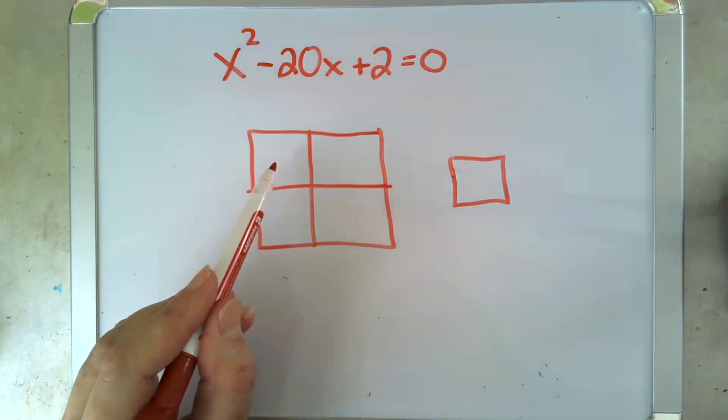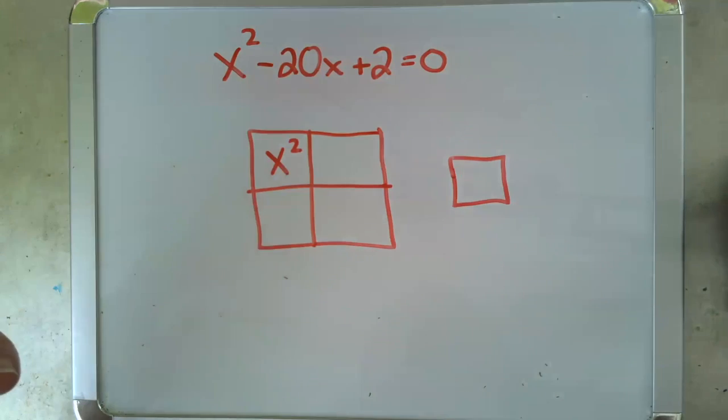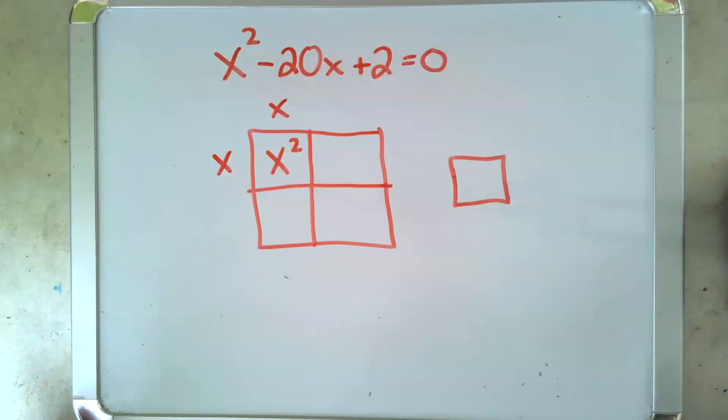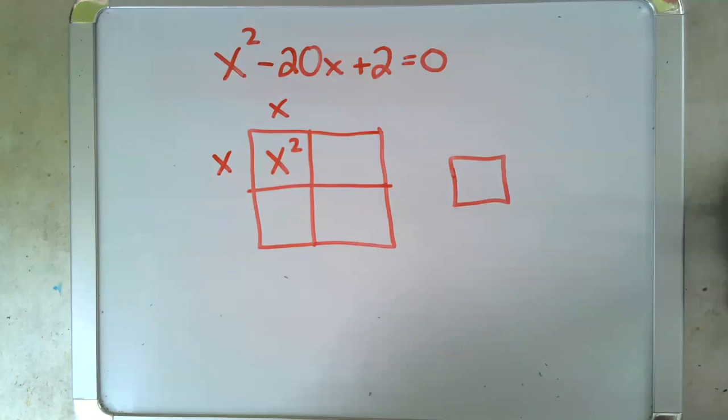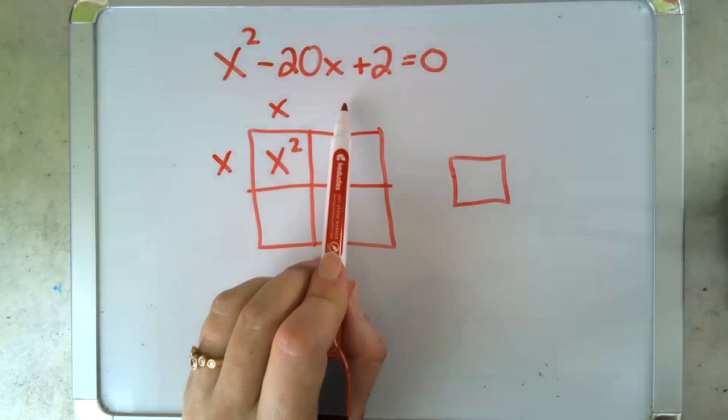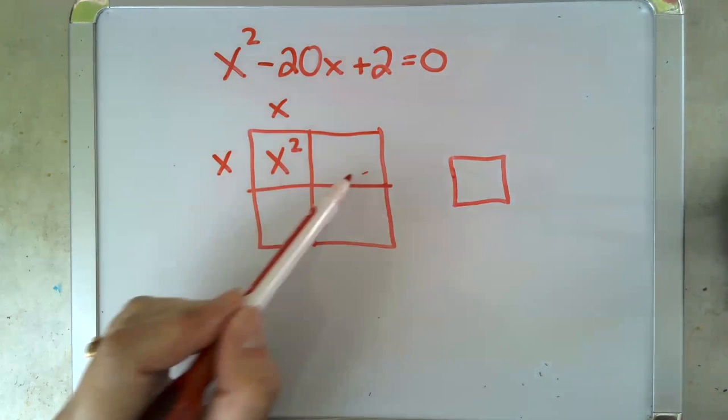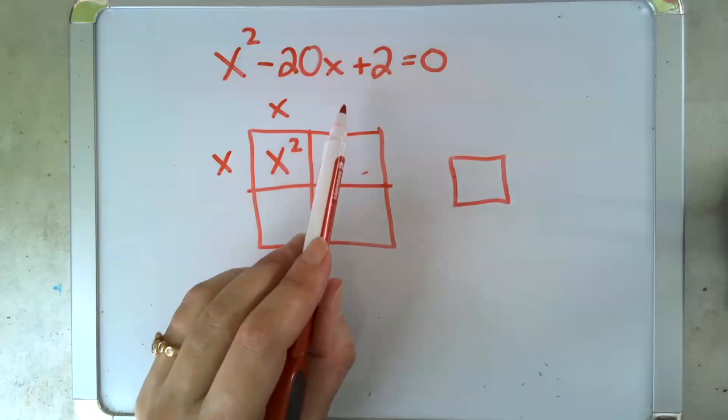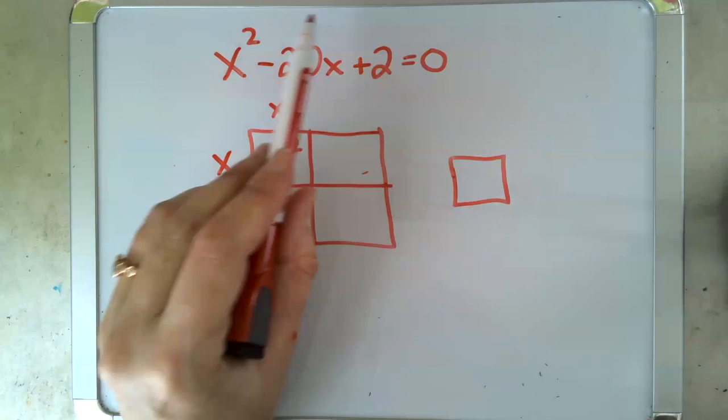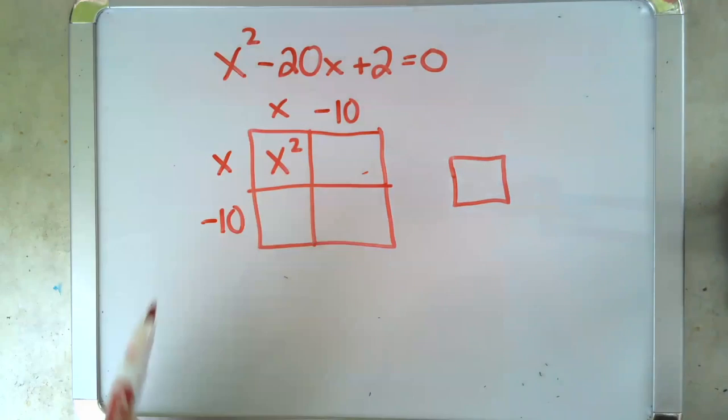This upper box we know is going to contain that x squared and the two things that will multiply to it will be an x and an x. Now these next two boxes will be completed by putting the same thing here and here. And when we multiply them and then add them, that'll make our negative 20x. The way we find out what goes here is we just take negative 20 and divide it in half. Negative 20 in half is negative 10.